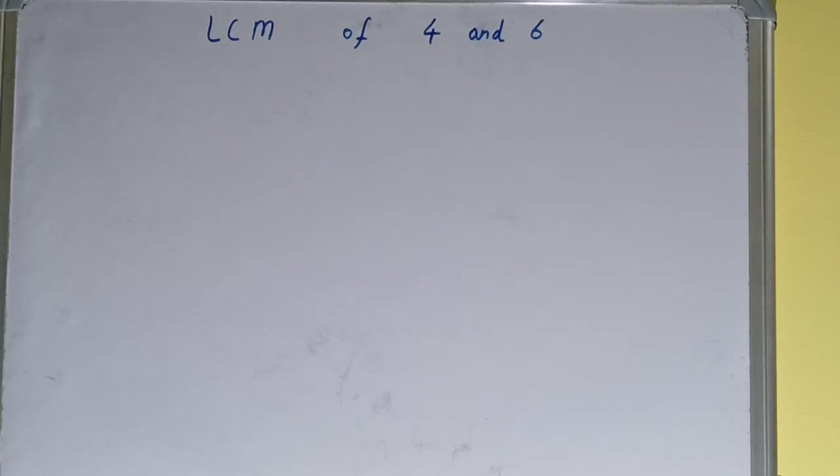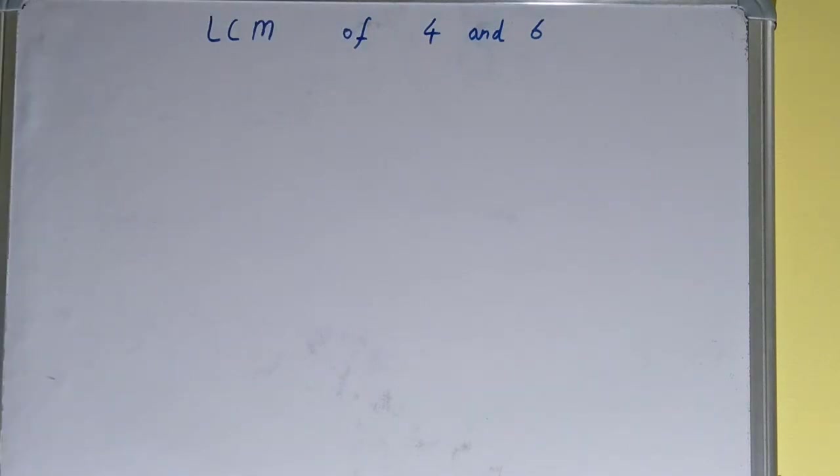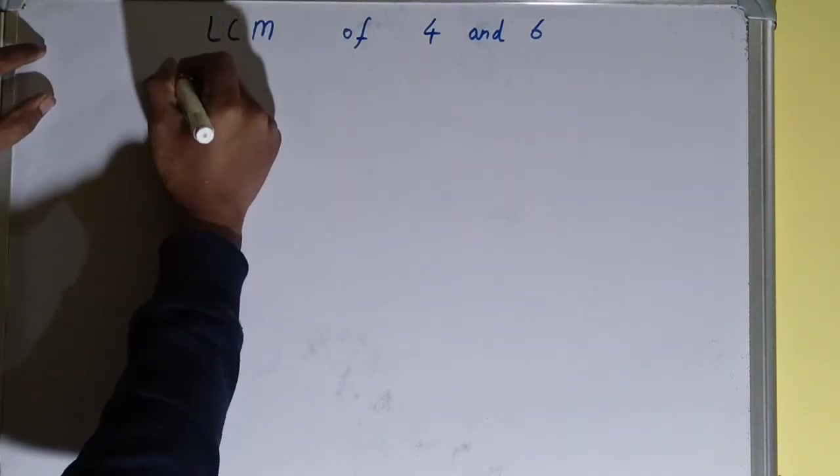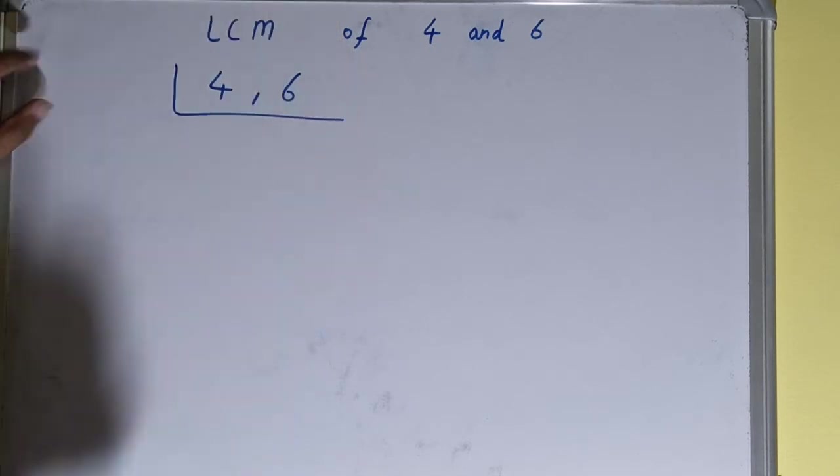Hello friends, and in this video I'll be helping you with the LCM of the numbers 4 and 6. So let's start. First thing you need to do is write both the numbers like this: 4 comma 6.